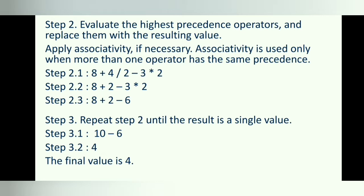Evaluating from the left: Step 2.1 gives 8 plus 4 divided by 2 minus 3 times 2. Step 2.2 gives 8 plus 2 minus 3 times 2. Step 2.3 gives 8 plus 2 minus 6. Step 3: repeat step 2 until the result is a single value. There is one more precedence level left — addition and subtraction — both with the same precedence, evaluated left to right. Step 3.1 gives 10 minus 6. Step 3.2 gives 4. The final value is 4.